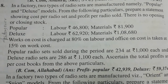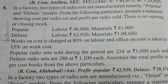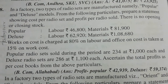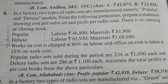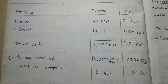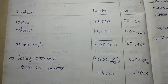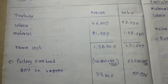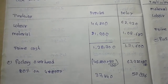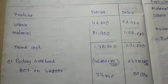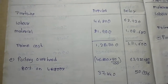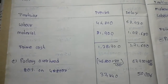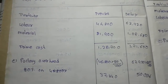For the deluxe model: labor is 62,920 and material is 18,680. Deluxe labor and material: labor 62,928. Total prime cost for deluxe model is 1,71,600.